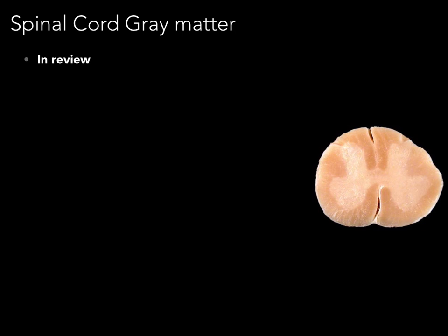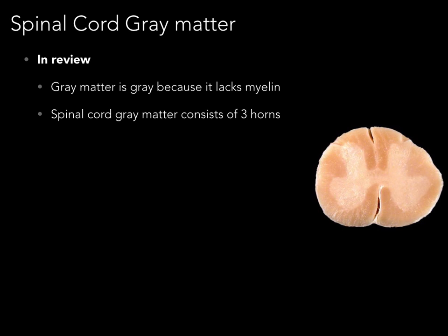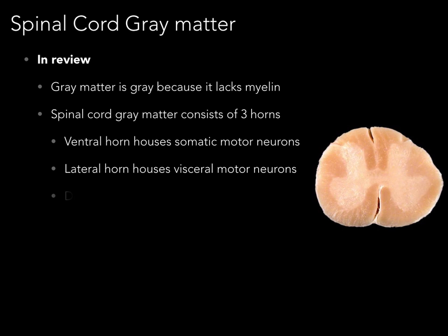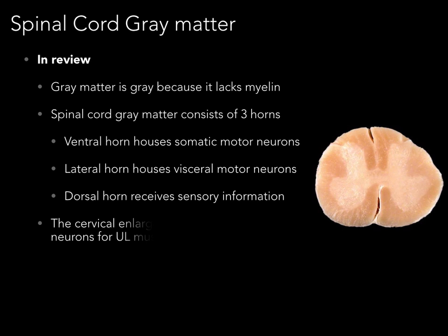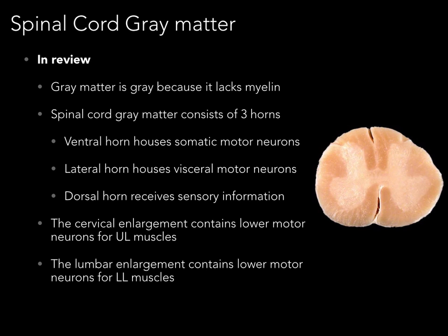In review: gray matter is gray because it lacks myelin. Spinal cord gray matter consists of three horns — the ventral horn houses somatic motor neurons, the lateral horn houses visceral motor neurons, and the dorsal horn receives sensory information. The cervical enlargement contains lower motor neurons for upper limb muscles, and the lumbar enlargement contains lower motor neurons for lower limb muscles.